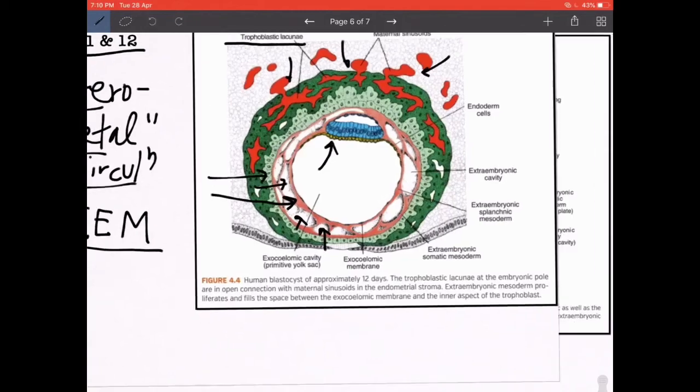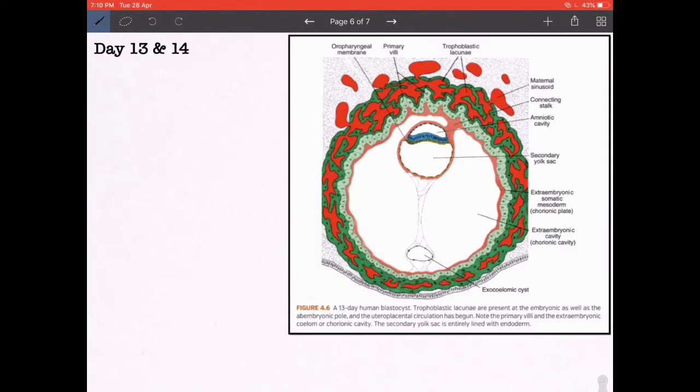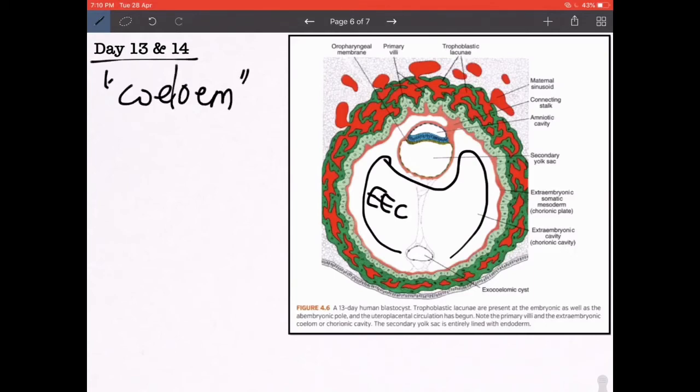This huge cavity that is formed now is known as the extraembryonic coelom. That's an important word and you are going to be using it for quite some time. Extraembryonic coelom. Remember extraembryonic is important because there is an intraembryonic coelom as well. This is happening somewhere around the beginning of the 13th day. And if you see, the primitive yolk sac, the cavity inside the Heuser's membrane, is becoming smaller and shrinking in size, and now it is known as the secondary yolk sac, while whatever is pinched off is known as the exocoelomic cyst.